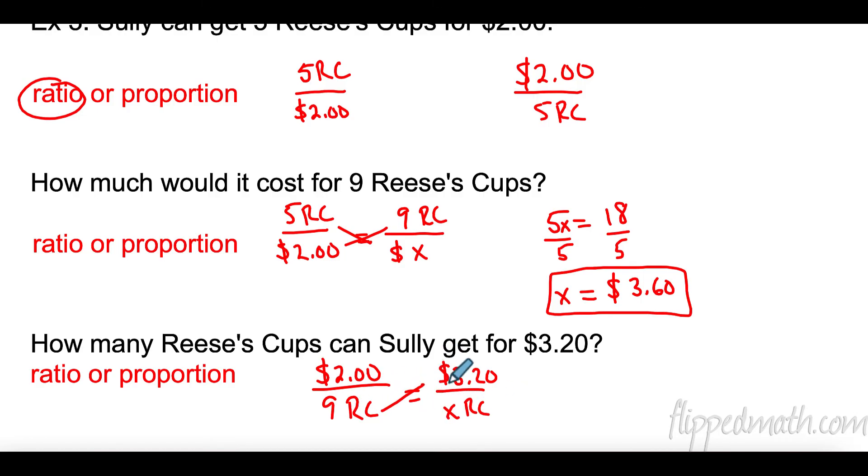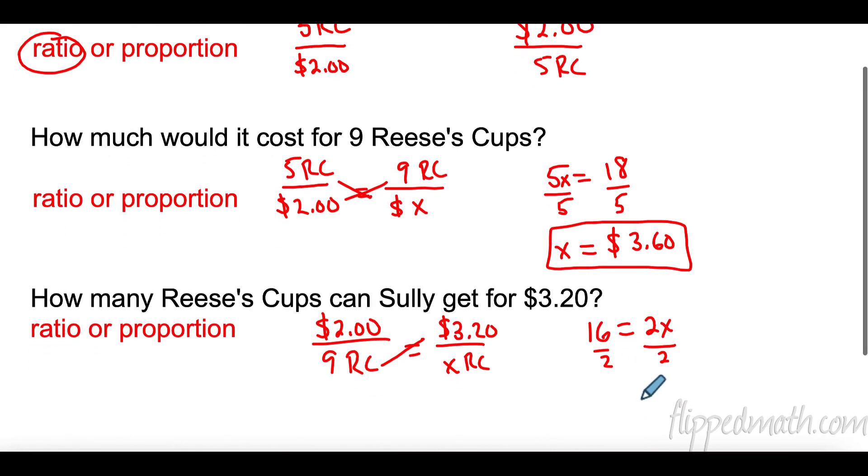Now, I'm going to cross multiply. So, nine times $3.20 is 16. And two times X is 2X. Divide both sides by two. And we find that we have eight Reese's cups. So, if we spend $3.20, we'd get eight Reese's cups. Remember, you need to set up your unit so that the same on top and the same on the bottom.